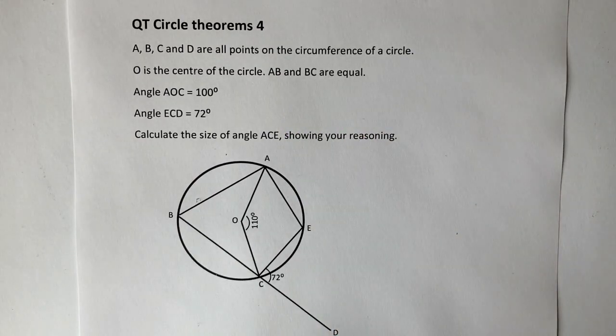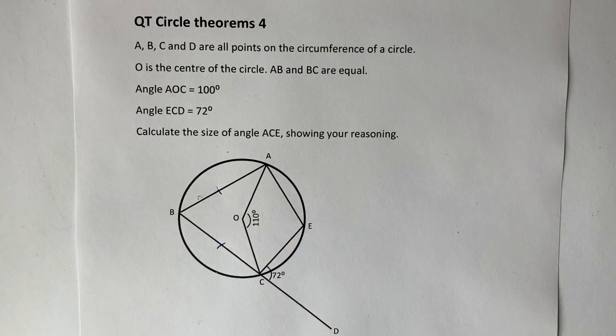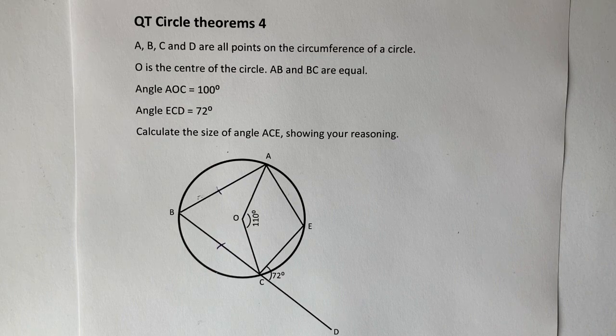So what we mean is this line AB and this line BC are equal. And that might be quite important when you're actually coming to trying to solve the question. And the question they're asking us to solve is to figure out the size of the angle ACE.